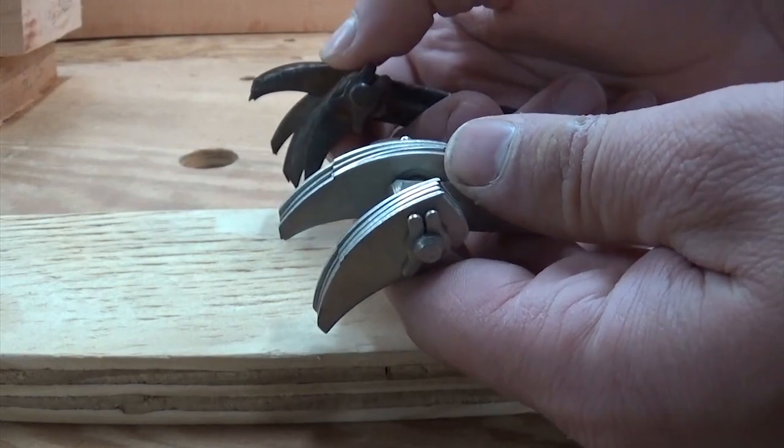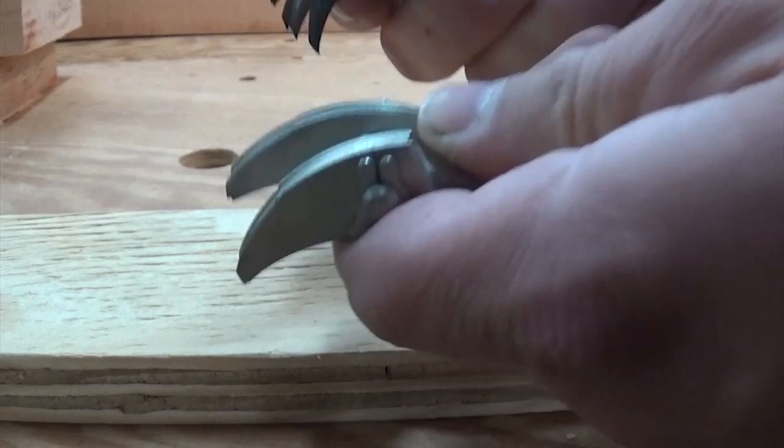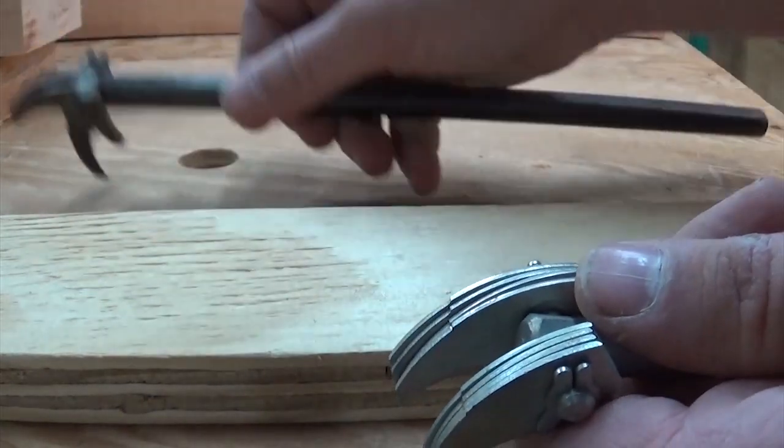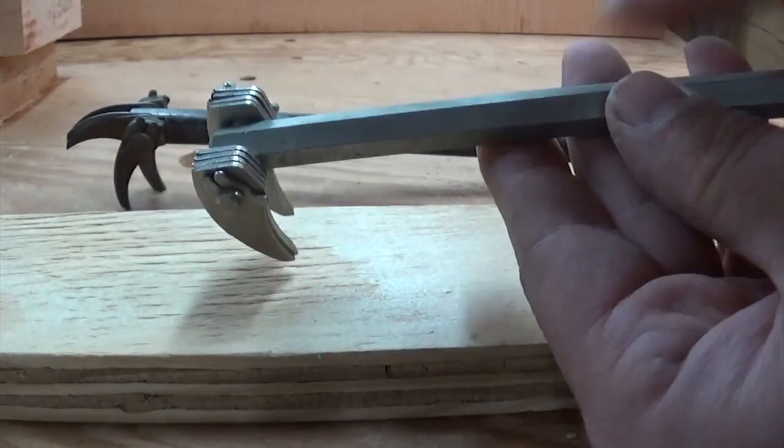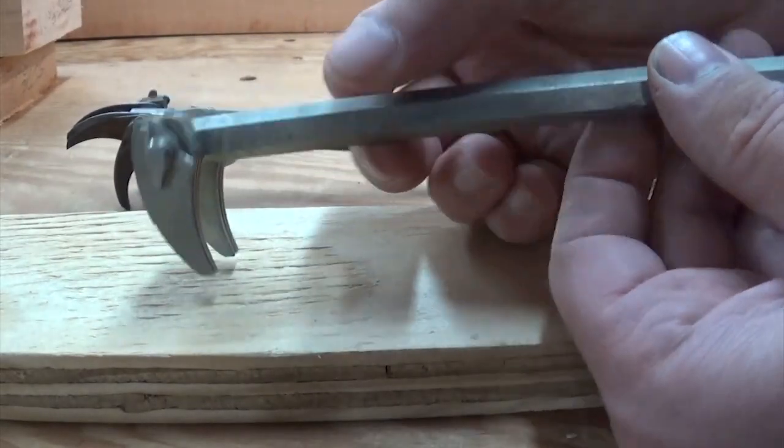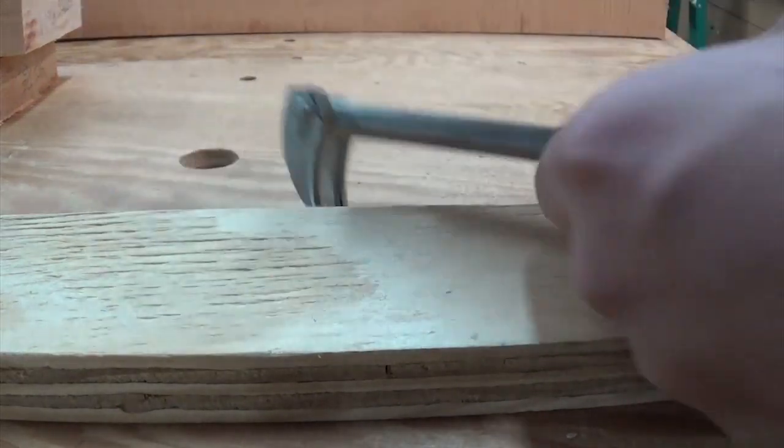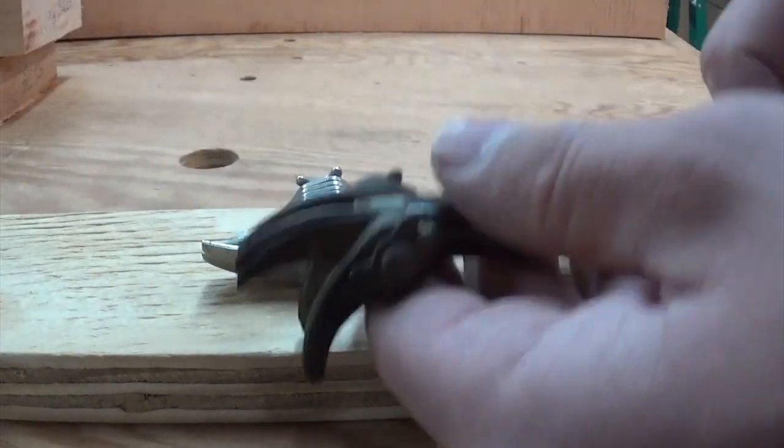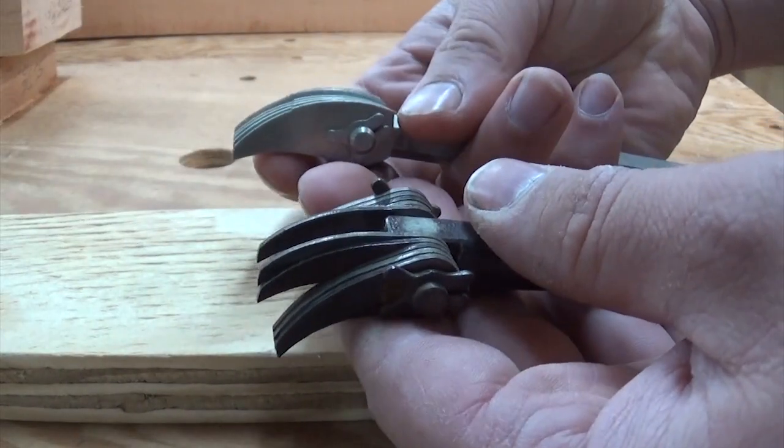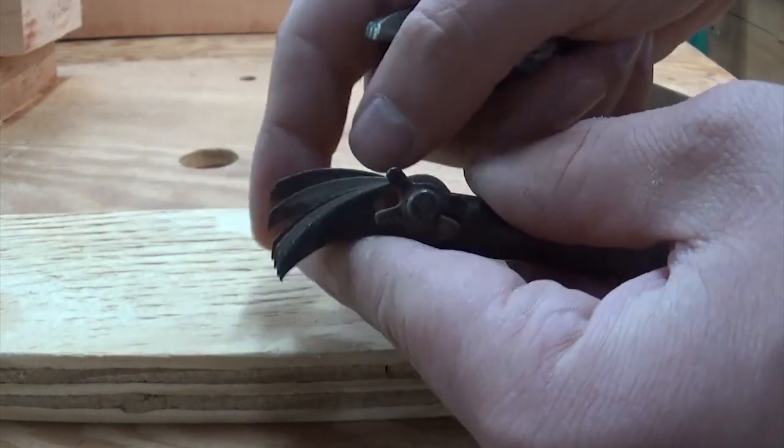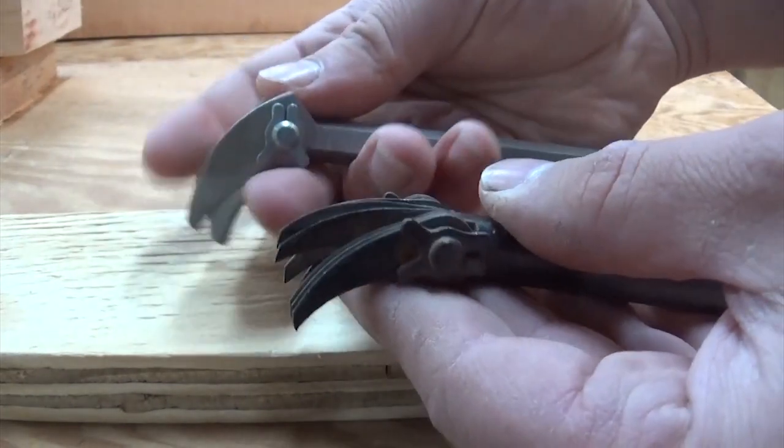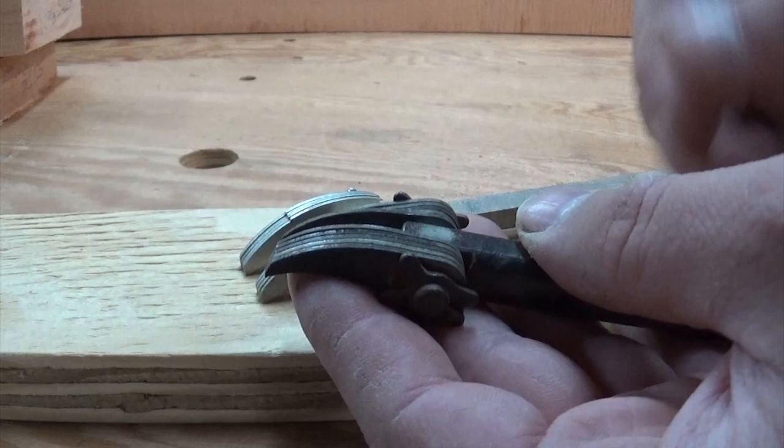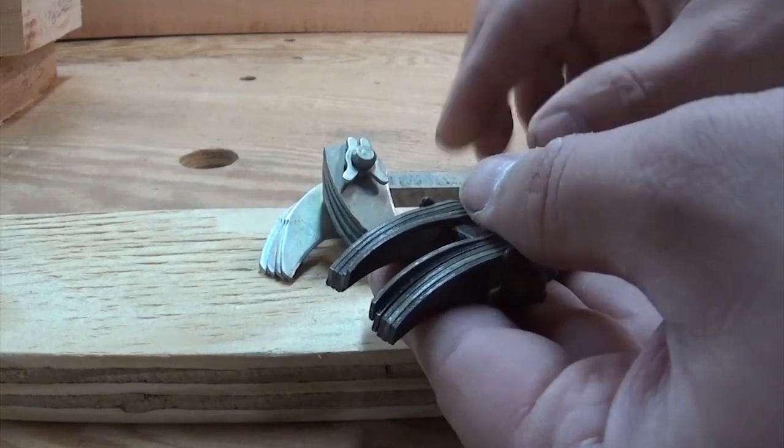Before we start building our own anti-kickback pawls, I want to take a look at a couple commercially available ones. This one is made by DeWalt, and this one is made by Craftsman. If we ignore the fact that this has a hexagonal shaft and this one has a round shaft with a flat milled in it, and just look at the ends, at first glance they seem pretty similar. They have pointy fingers that can pivot. However, there's what I think is a significant difference between these two setups.